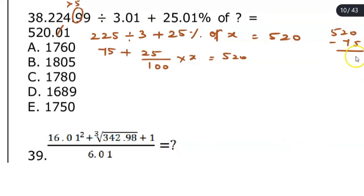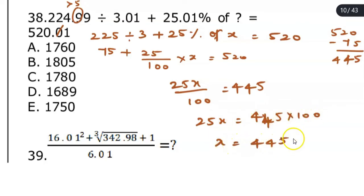10 minus 5 is 5, and 11 minus 7 is 4, which is 445. So here you get 25 times x by 100 equals 445. So 25x equals 445 times 100 divided by 25.